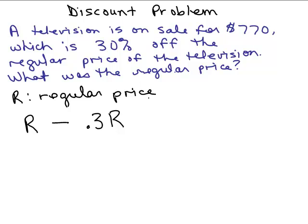If you know how to finish this on your own, go for it. So R minus 0.3R, that's how much it would cost once it's on sale, and we know that sale price is 770 dollars. So that's the equation.